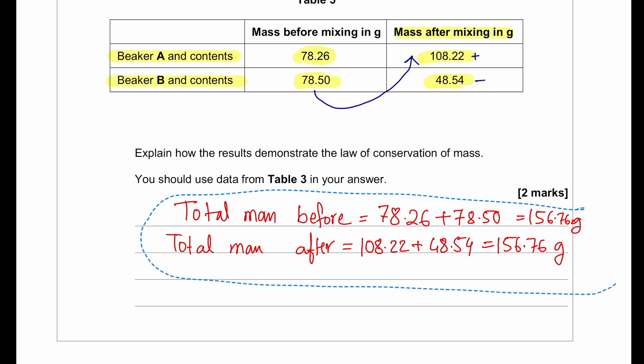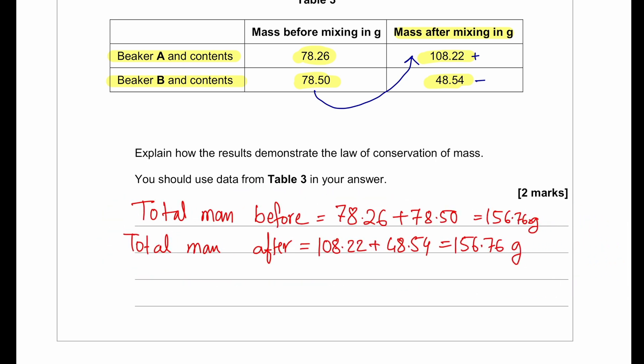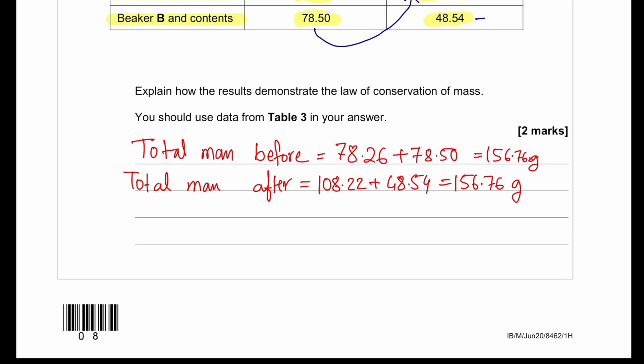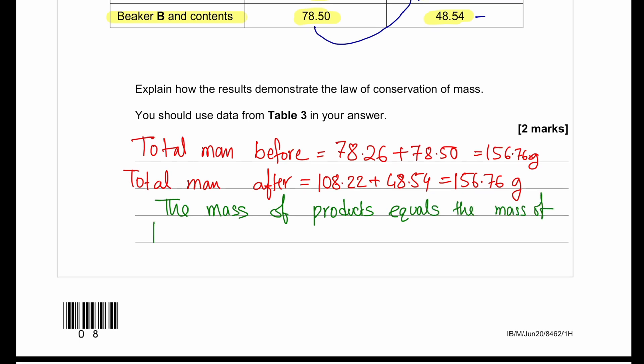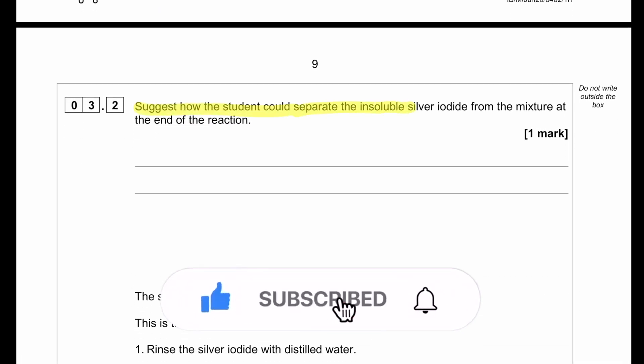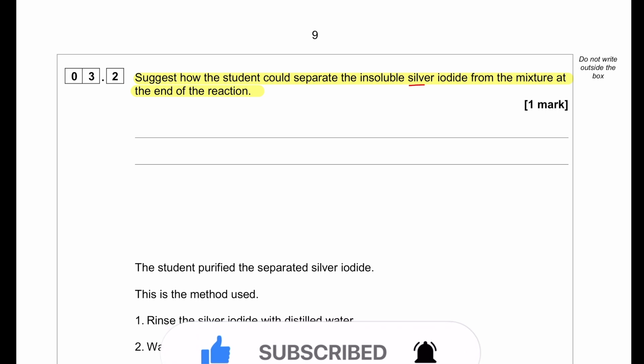Explain how the results demonstrate the law of conservation of mass. We're going to say the mass of the product equals the mass of the reactants. Suggest how the student could separate the insoluble silver iodide from the mixture at the end of the reaction. The silver iodide that is produced is actually insoluble, so the student can just simply filter to get the silver iodide.